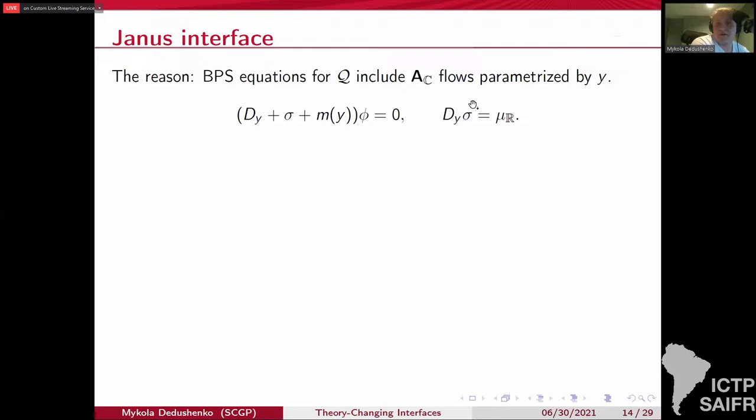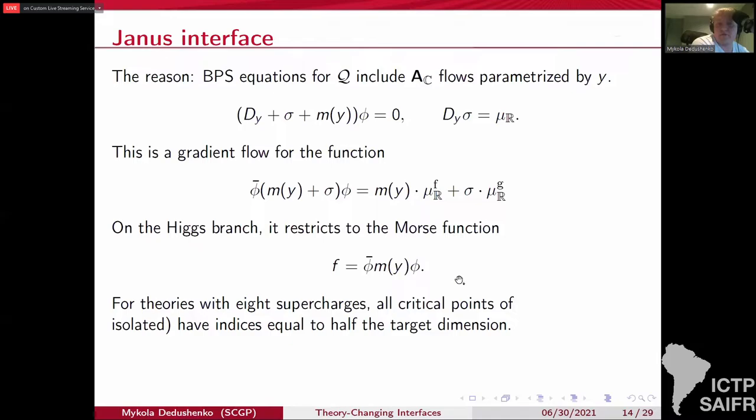Now, why is that? Simply because the BPS equations give you flows for the complexified torus. Or you can think of them as gradient flows for the following potential, where you take real moment map for the flavor symmetry times your y-dependent mass and real moment map for gauge theory times sigma. If you restrict this to the Higgs branch, you will get the following Morse function on the Higgs branch. Of course, it's written in the ambient space coordinates. The actual function is complicated. But in theory with eight supercharges, all critical points of this function have equal indices, equal to half the target dimension.